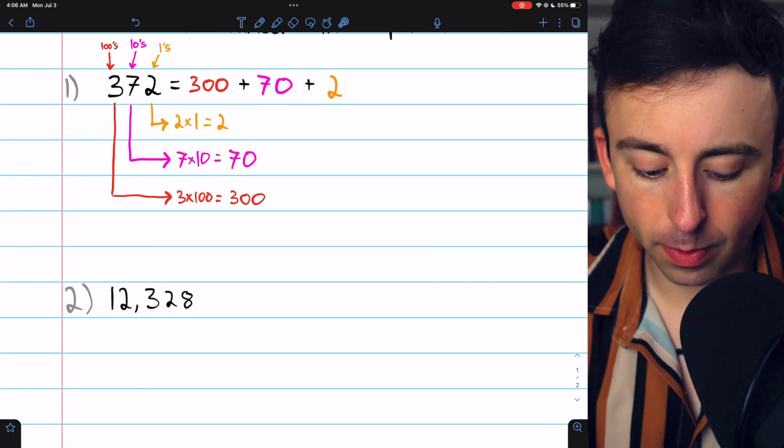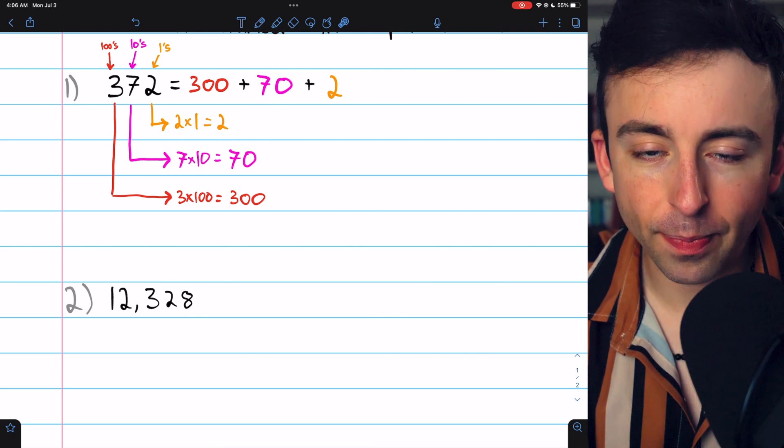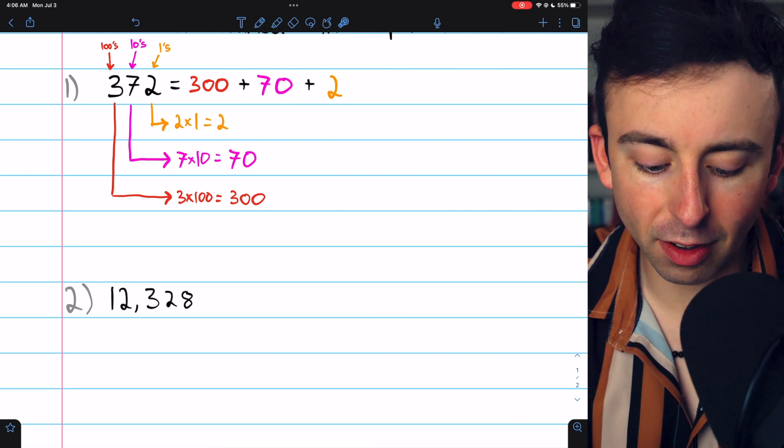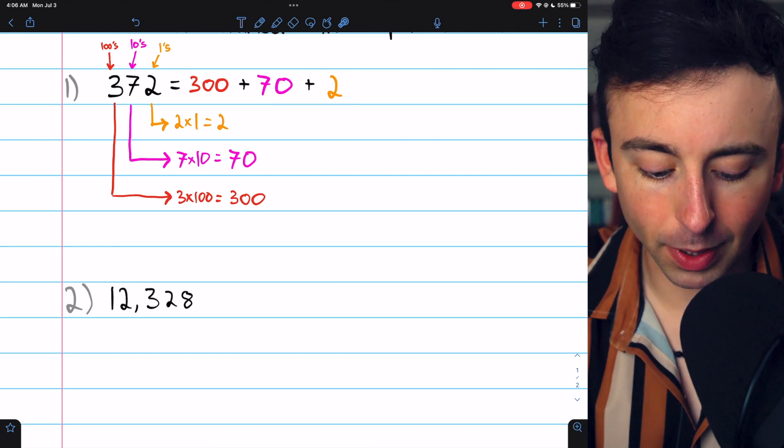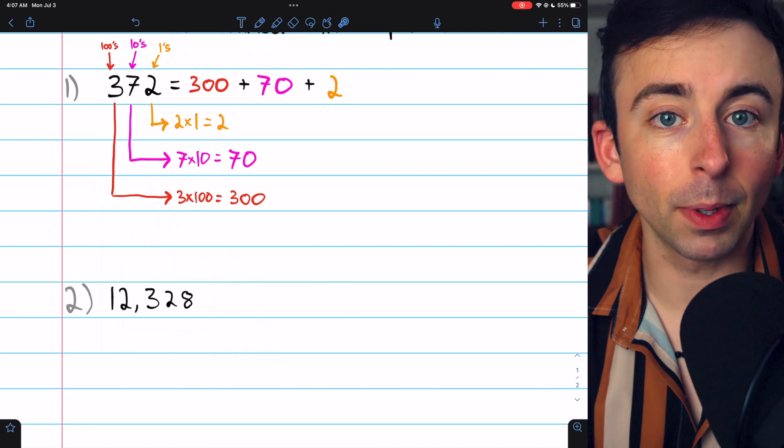Try our next example, 12,328. In this case, we have the 1's place, the 10's place, the 100's place, the 1,000's place, and the next place is the 10,000's place.